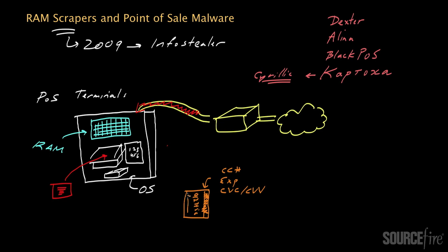Imagine you're buying something in a store and you slide your credit card into the reader on the POS terminal. Pieces of information like your credit card number, expiration date, and CVC or CVV values are read into the terminal and processed to allow the transaction to proceed. Because POS terminals handle sensitive data like credit card numbers, they must have security measures in place — mandated by the payment card industry's data security standard, abbreviated as PCI DSS. For example, sensitive data stored on the hard drive must be encrypted, and sensitive data transmitted over the network must also be encrypted.